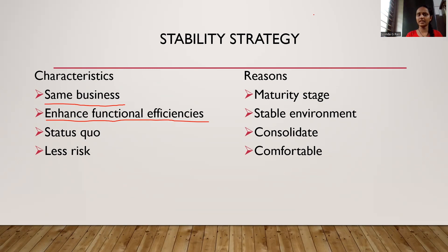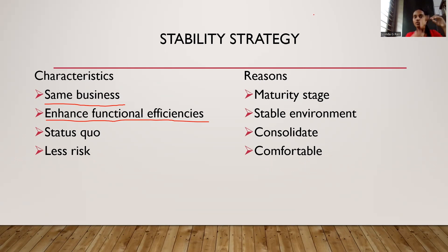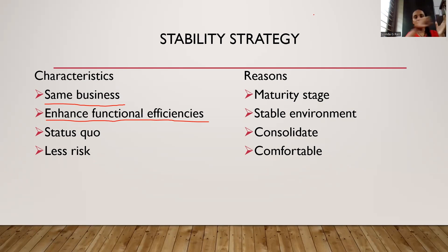Why do companies opt for stability strategy? The first reason is maturity stage. When they have a product that is in the maturity stage — it is not newly introduced, it has grown up and is almost mature — you cannot make more innovations to attract more customers. You cannot bring something new into it. So you just let it stay for some time, neither removing it from the market nor trying to improve it. You just want it to stay the same, and keep it stable.